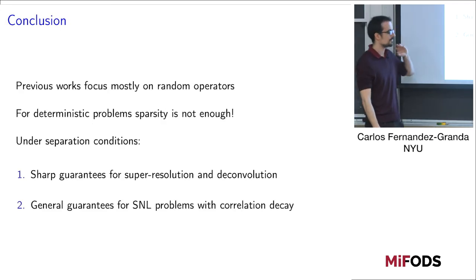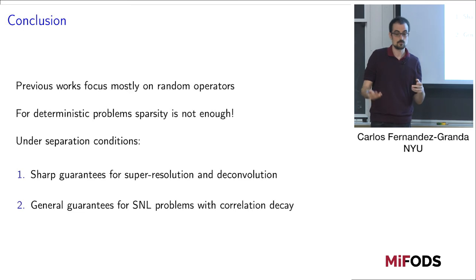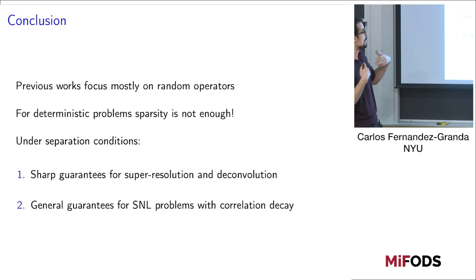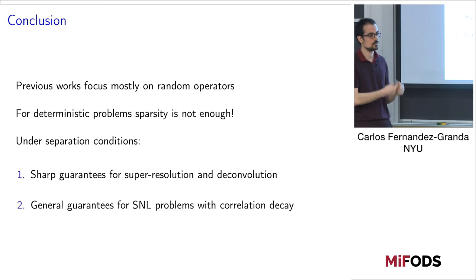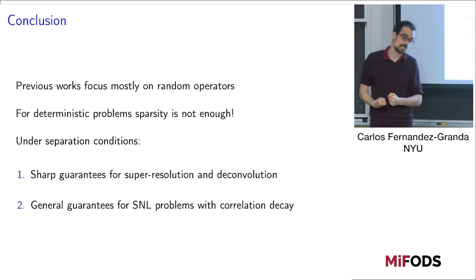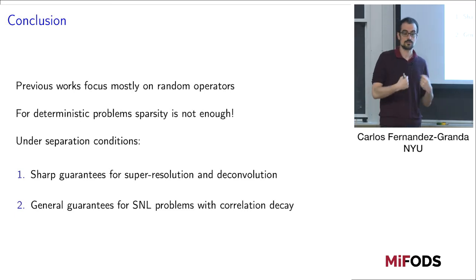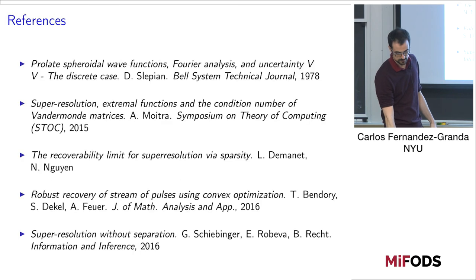In conclusion, previous theory on sparse recovery focuses mostly on random operators due to the great successes in compressed sensing. But for deterministic problems, sparsity is not enough. Imposing separation conditions tied to the correlation structure of the dictionary allows us to derive very sharp guarantees for super-resolution and deconvolution, and has enabled a general framework to understand when classes of SNL problems can be solved. Thank you.